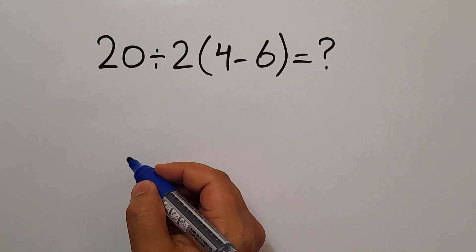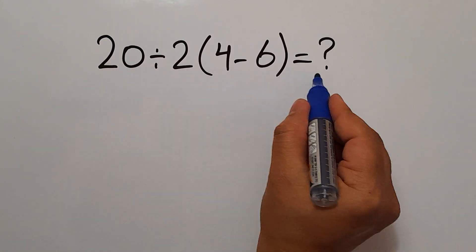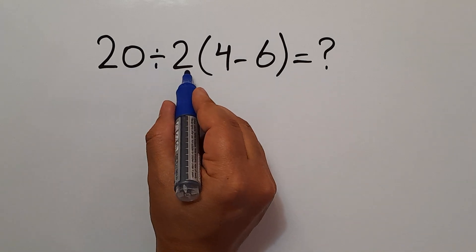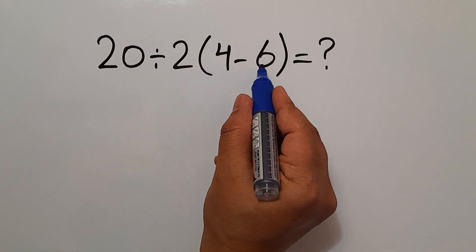Hey guys and welcome to this video. In this video, we want to calculate this expression: 20 divided by 2 then times 4 minus 6.